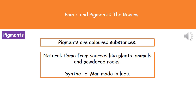Welcome to our review on paints and pigments. If we think about pigments first of all, when we're referring to a pigment, we're talking about a coloured substance. These can come from either natural or synthetic sources. Natural sources would be things like plants, animals, and even powdered rocks, while synthetic sources are the ones that are man-made in laboratories.